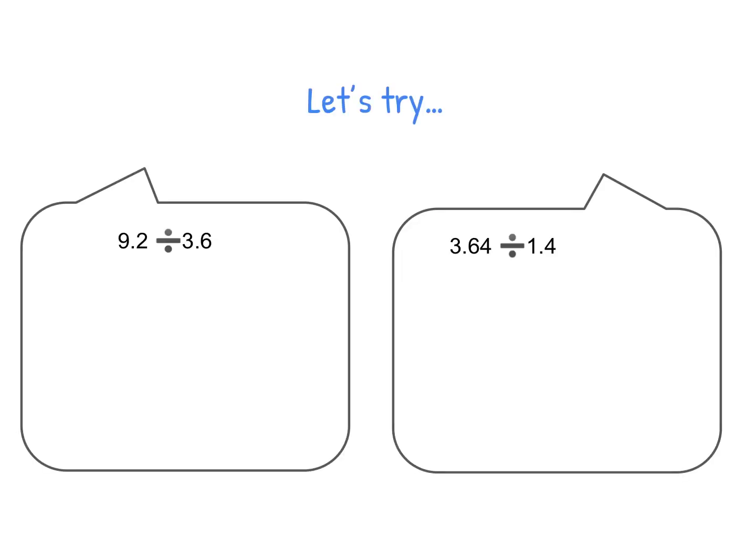So let's give this a try. The first step in our directions was to take our number sentence and turn it into a fraction. So that means the 9.2 is going to be on top and the 3.6 is going to be on the bottom. So then we asked ourselves a question, how many decimal places do we have on the top and on the bottom? You can see there's one on each, so we do not need to add any additional zeros to make the two decimal places equivalent.